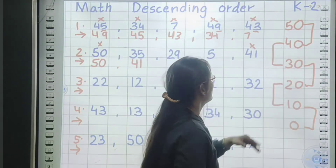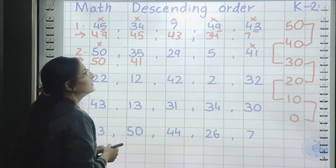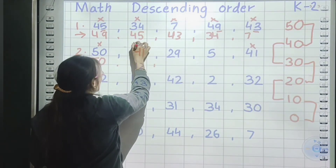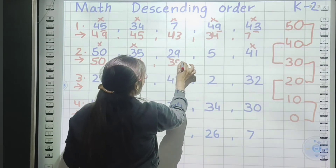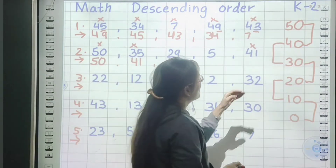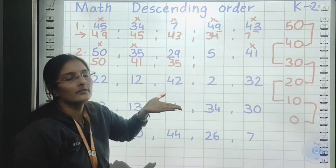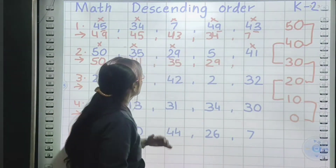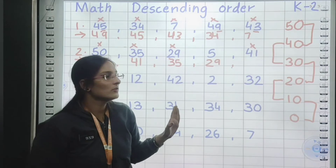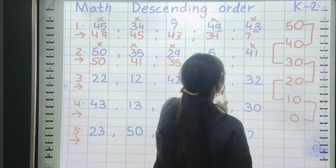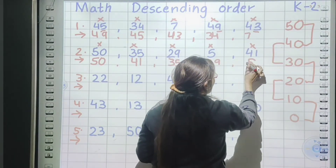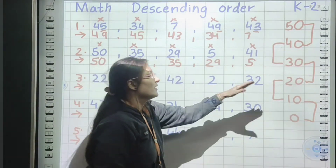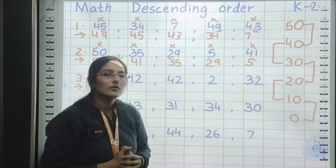Now move to 40 to 30. Any number? Yes — 35 is in that line. Put cross mark and write 35, comma. From 30 to 20, is any number there? Yes — 29. Put cross mark and write 29, comma. We are checking each line carefully — if we forget to write any number, we can catch the mistake this way. From 10 to 0, yes — 5 is there. Put cross sign and write 5. Always do this in a proper manner.